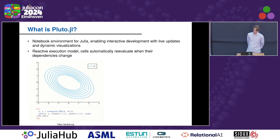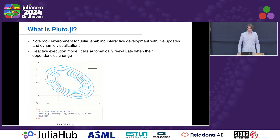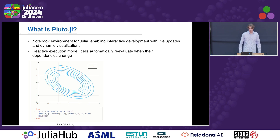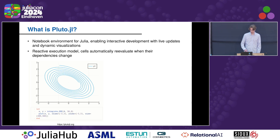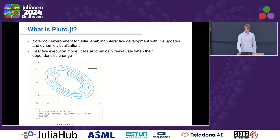What even is Pluto? Pluto is a notebook environment for Julia which enables interactive development with live updates and dynamic visualizations. It has a reactive execution model, which means that cells automatically re-evaluate when their dependencies change. In the image, you can see a Pluto cell with some coordinates at the bottom that creates a plot, which is then shown at the top as the output of the Pluto cell.